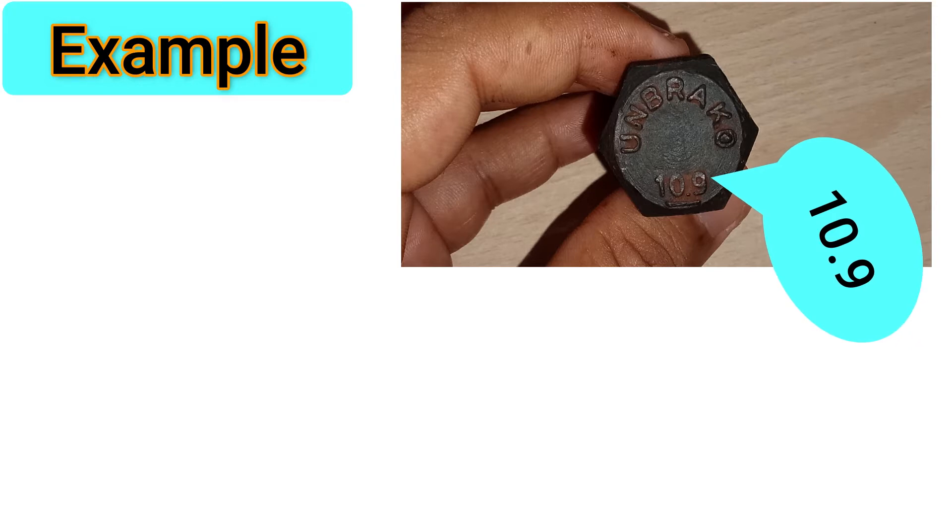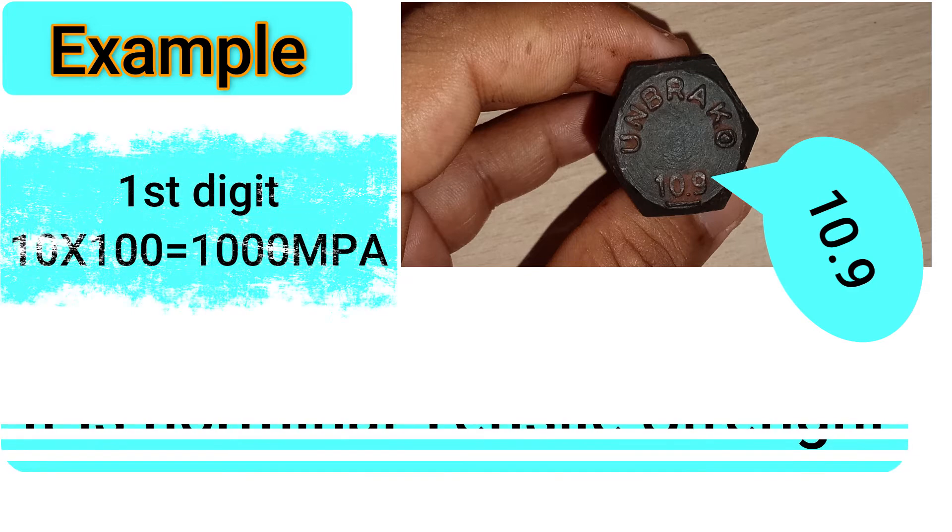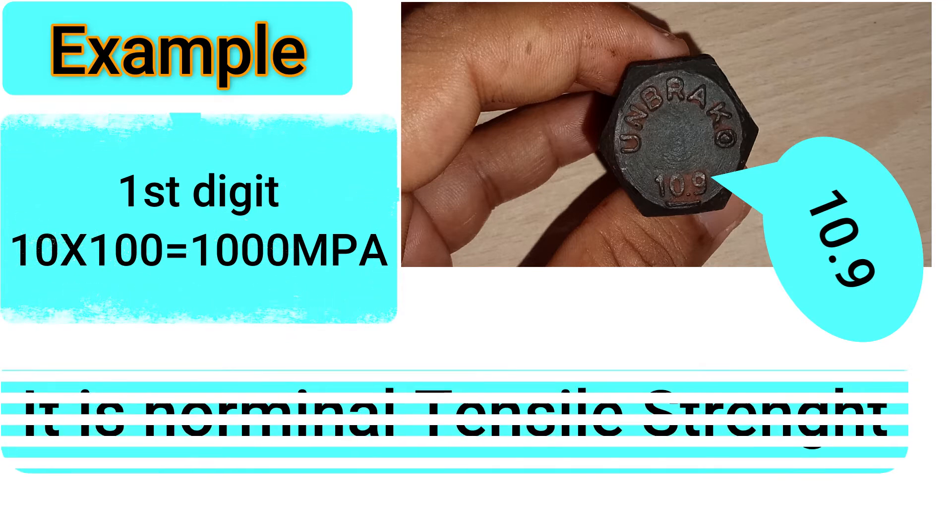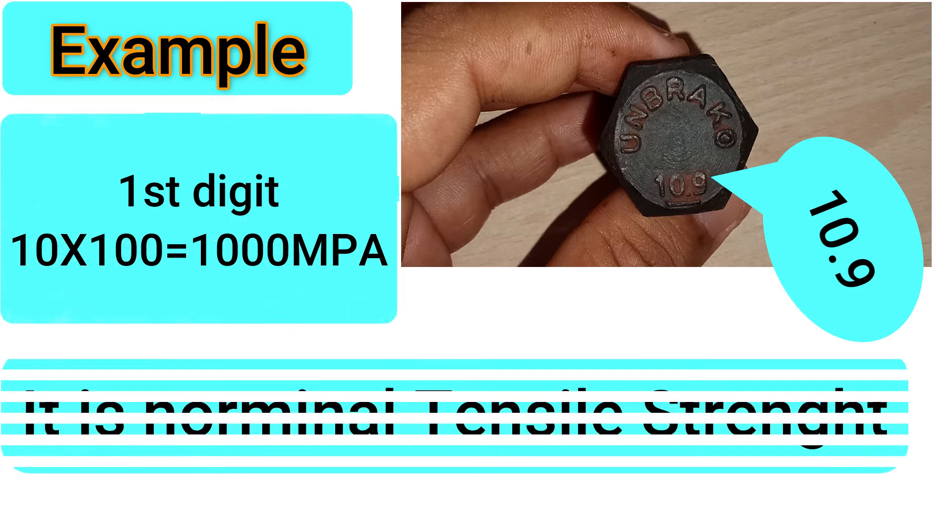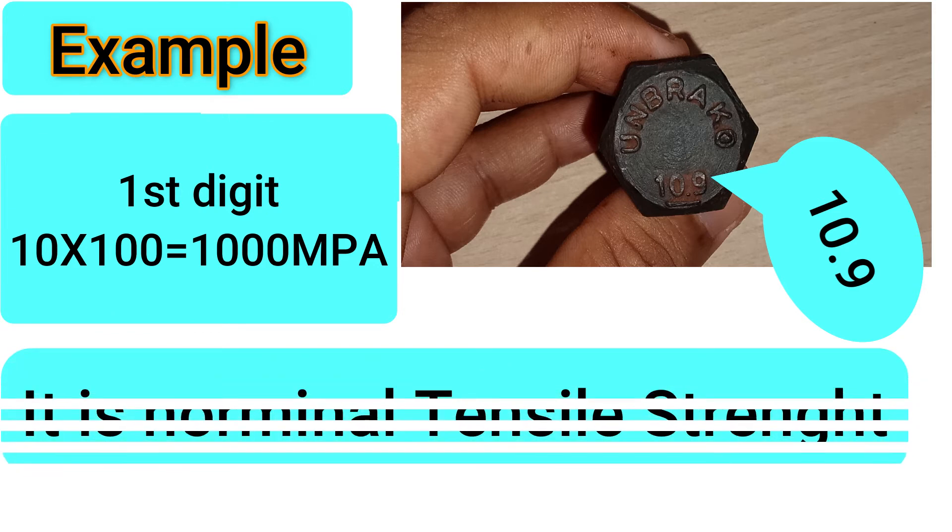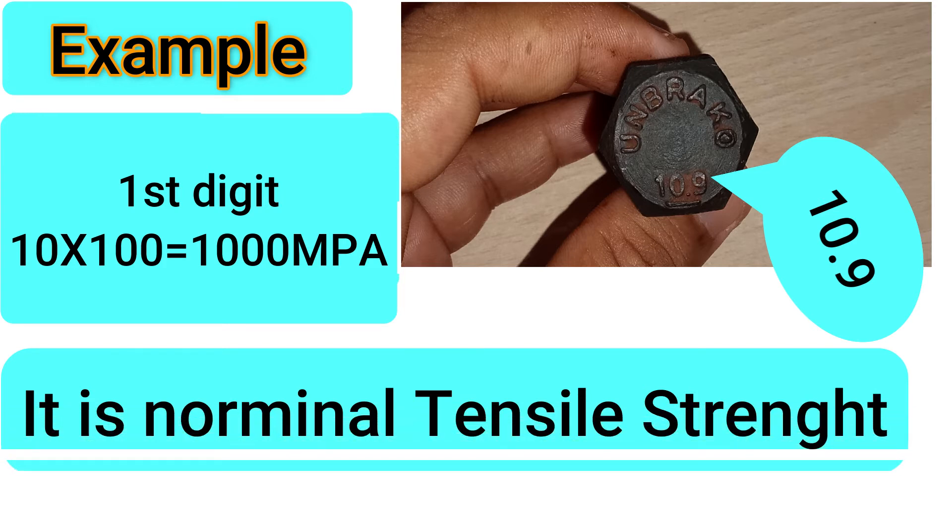Here the first digit 10, when you multiply it by 100, you get 1000 megapascal. That is nothing but the nominal tensile strength of the bolt. So what do you mean by nominal tensile strength? Nominal tensile strength is the maximum amount of load this bolt can withstand. That is, if the load applied on the bolt is more than 1000 megapascal, then the bolt will break.